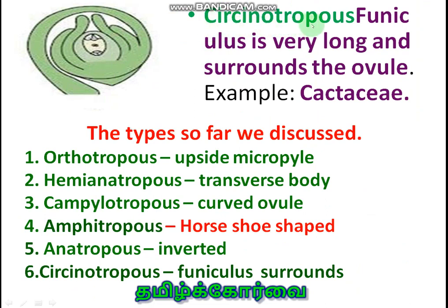Circinotropous: here the funiculus growth is more, to make the ovule come inside the funiculus itself, so the ovule is surrounded by the funiculus. Like orthotropous, the micropyle is upright. Example: Cactaceae — members of the Cactaceae family.